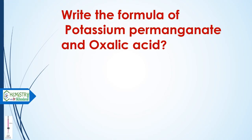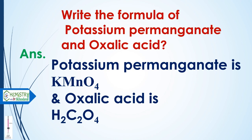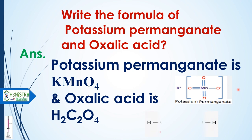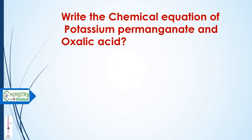The first question is: write the formula of potassium permanganate and oxalic acid. As you know, potassium permanganate is KMnO4 solution, and oxalic acid is H2C2O4. This is the structure of potassium permanganate and oxalic acid.